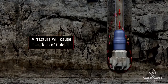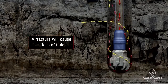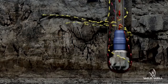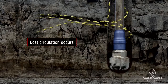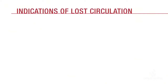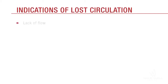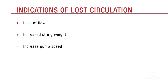A fracture in the formation could lead to a loss of drilling fluid to the formation. Whenever drilling fluid is lost to fractures, a situation called lost circulation occurs. The most obvious indication of lost circulation is no flow — the flow of drilling fluid across the shakers will stop. Other indications include when the flow indicator decreases to zero, an increase in string weight, or an increase in pump speed if the rig is not equipped with constant speed pumps.